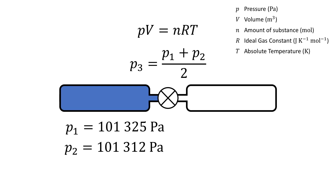Finally, we take tube one to have the same initial pressure, but tube two has a pressure of 101,312 Pascal — so that is a difference of 13 Pascal. What happens when we open the valve? The pressure equalizes to 101,318.5 Pascal. So we have clearly established that you cannot have a pressure difference between two regions without a barrier between the two. As soon as you remove the barrier, the pressure will equalize.